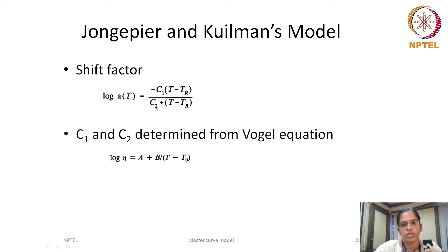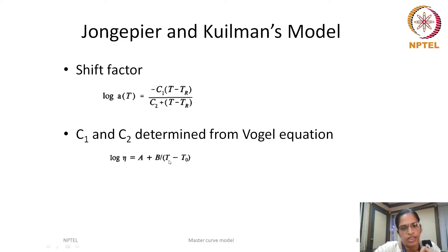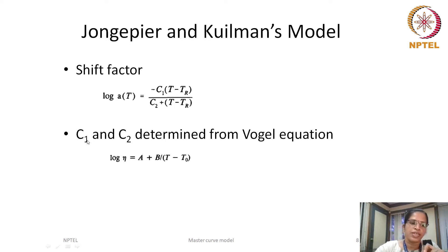The constants C1 and C2 are not universal constants but vary with different binders, as predicted using experimental data collected for different binders. He used the Vogel equation, where viscosity is dependent on temperature T, to determine the constants C1 and C2. In this equation, A, B, and T0 are constants, and B is the product of C1 and C2. Knowing viscosity eta at different temperatures allows prediction of constants A, B, and T0 from experimental results. The highlight is that C1 and C2 vary with different binders.